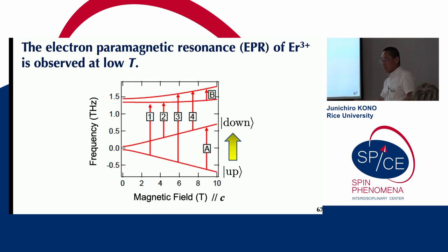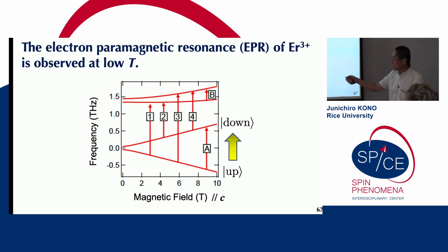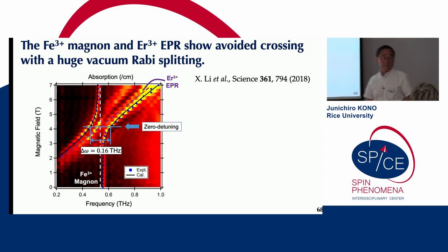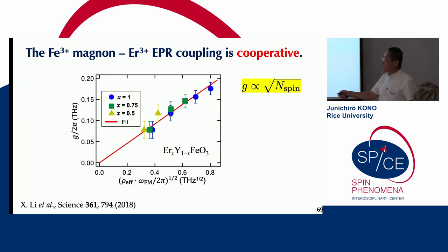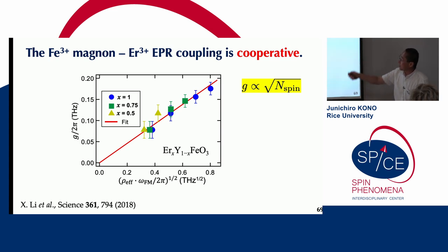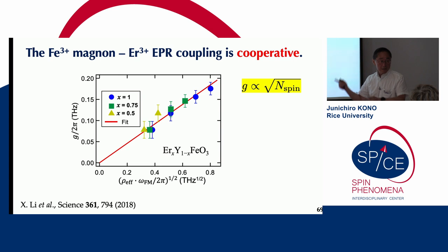At low enough temperatures and high enough magnetic fields, the only important transition is between the Kramers doublet — essentially electron spin resonance or electron paramagnetic resonance — which increases with magnetic field. When it meets the magnon frequency, it produces ultra-strong coupling vacuum Rabi splitting. The Rabi splitting is cooperative, and by diluting the spins — substituting erbium with yttrium — we are able to demonstrate that the coupling constant is proportional to the square root of the number of spins, demonstrating Dicke cooperativity in this magnetic system.